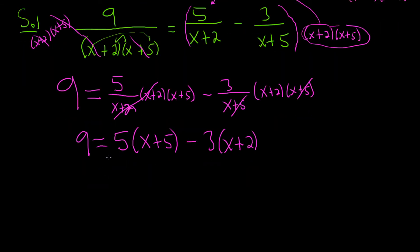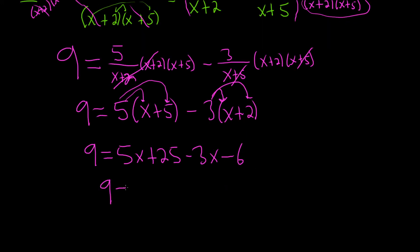Okay, let's see what happens here. So this is 9 equals. So 5 times x is 5x. And 5 times 5 is going to give us 25. Then distributing the minus 3. Minus 3 times x is minus 3x. And minus 3 times 2 is minus 6. This gives us 9 equals. So 5x minus 3x is 2x.